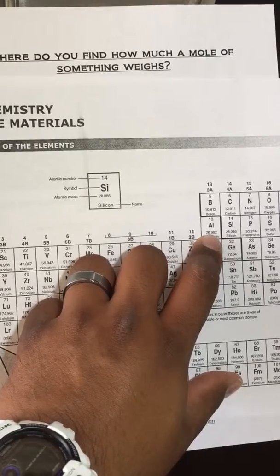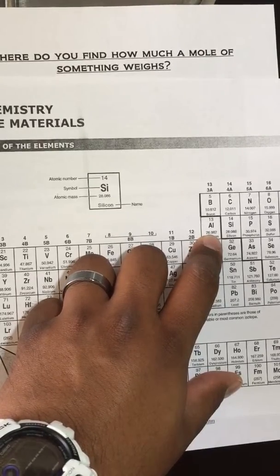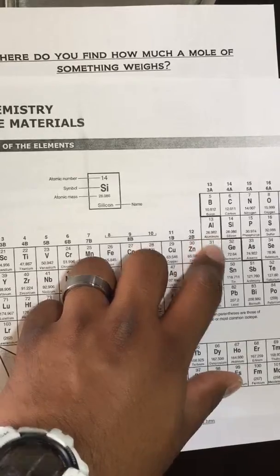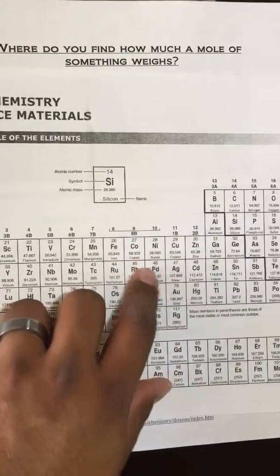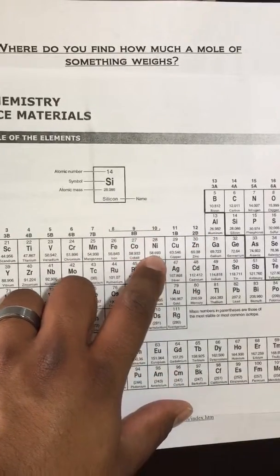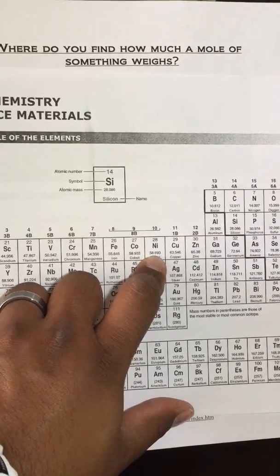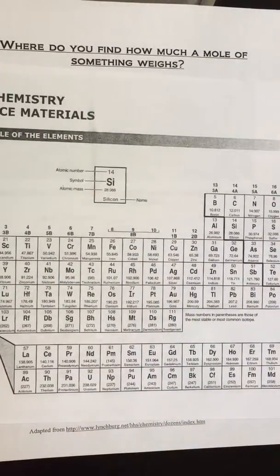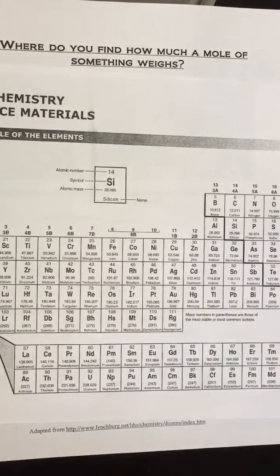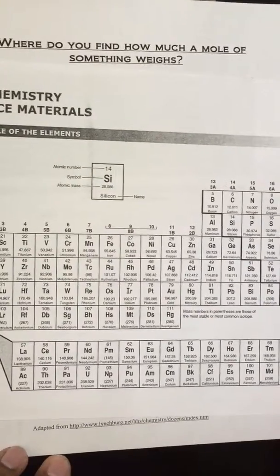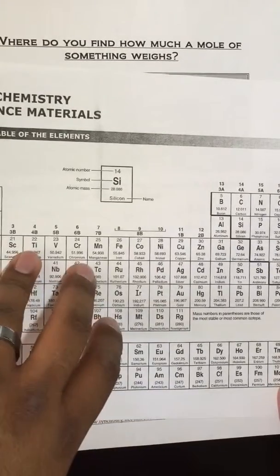So one mole of aluminum is equal to 26.982 grams. And if I ask you, what's one mole of nickel? Then you're going to say one mole of nickel weighs 58.693 grams of nickel. So the units for molar mass are going to be grams per mole. From now on, that's what you're going to be noticing.